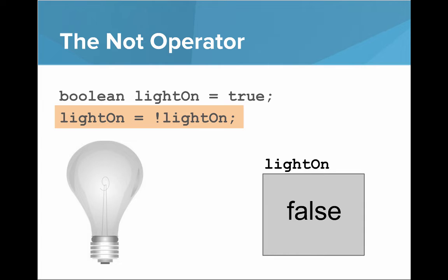In the next line, we say lightOn gets the value of NOT lightOn. So now in our box, lightOn has the value false and the light is off. What that NOT is really doing is switching the value to the opposite of what it had before.